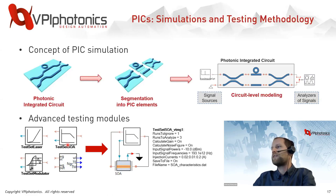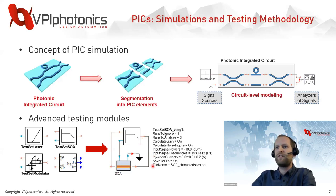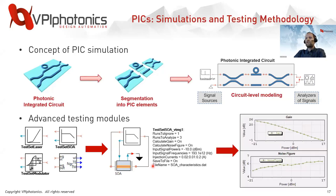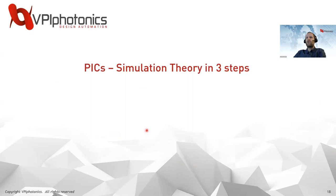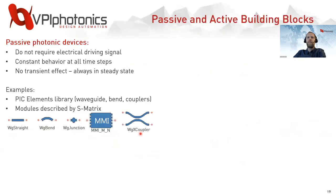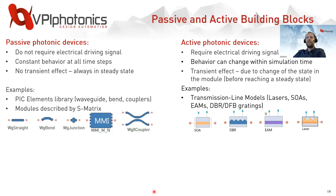I will present advanced testing modules developed within the Impulse project. These include four modules: waveguide group index extraction and testing modules for modulators, lasers, and SOAs. On the schematic, a single module serves as both input and output — two ports are signal sources, and one input port is a visualizer. Typical extraction figures from the SOA include gain and noise figure. To understand how simulations are performed, let's start with three main steps of the simulation theory for modeling PICs. First, we need to look at the difference between active and passive components.